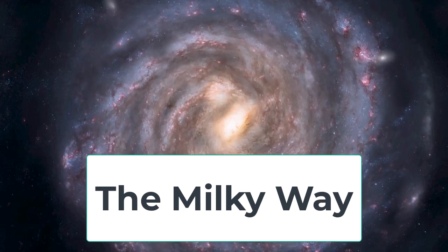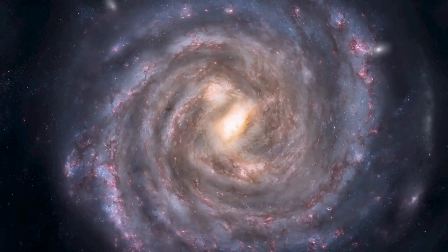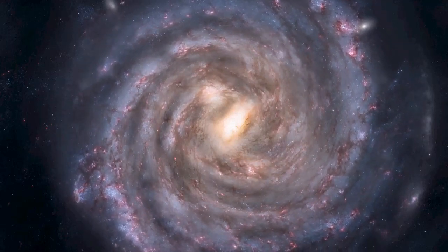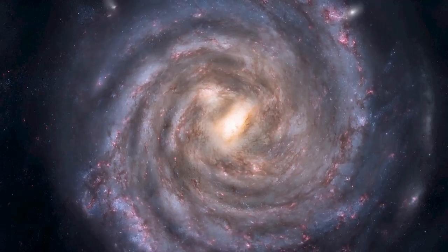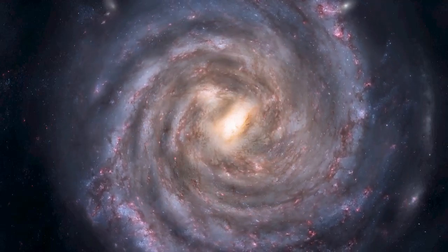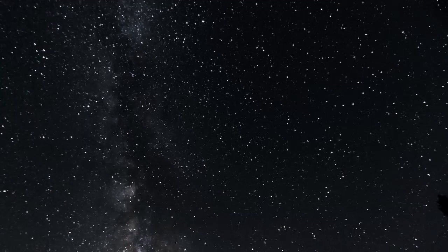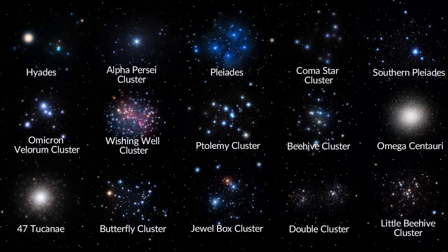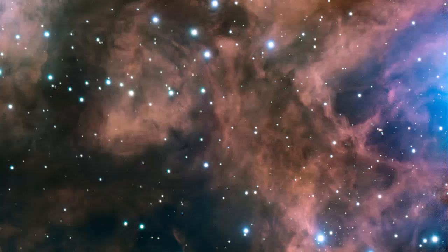The Milky Way is a part of the local group of galaxies, and there are many such galaxies in the universe. The Milky Way includes many stars smaller than our sun as well as many others that are thousands of times bigger than the sun. It also includes many other celestial bodies such as clusters of stars, nebulae,